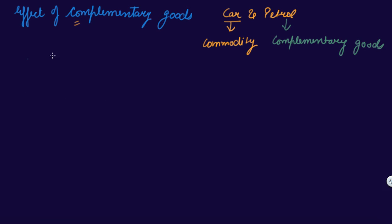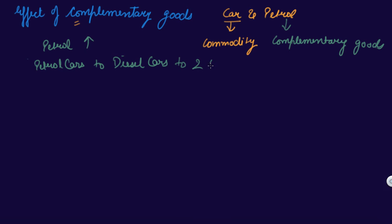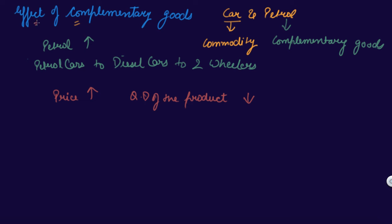Let's see what happens if the petrol price increases. What do people do? People shift from petrol cars to diesel cars, or if they cannot afford that, they shift to two-wheelers. As the price of petrol increases, the quantity demanded of the product — that is, the car — is decreasing. This is the effect of complementary goods.